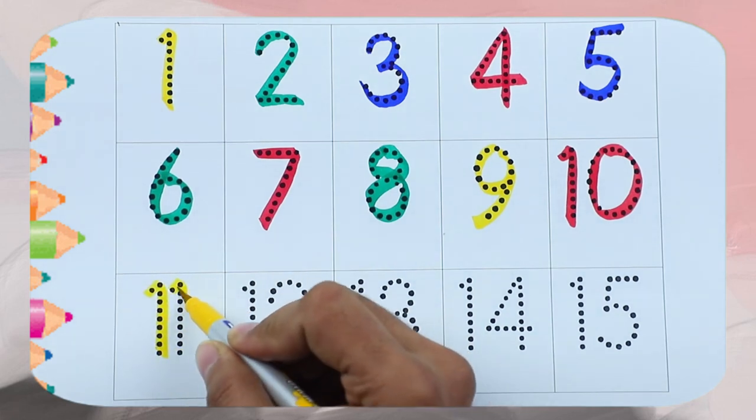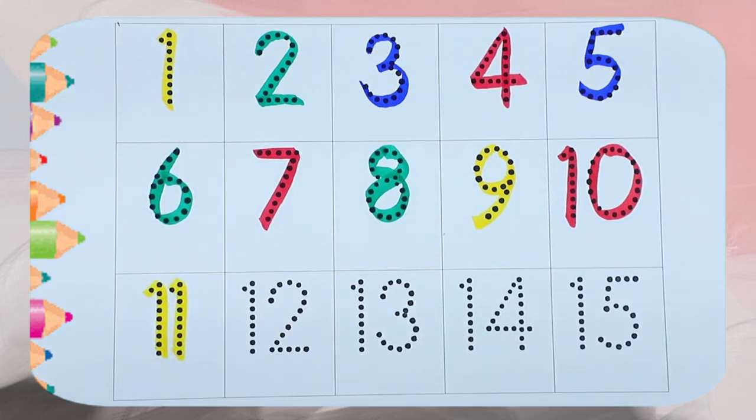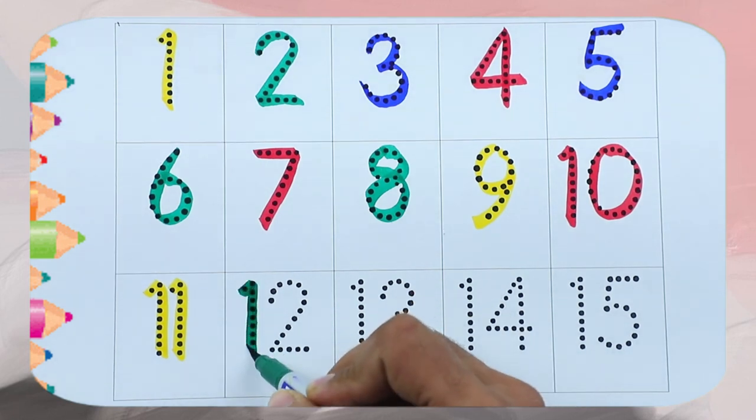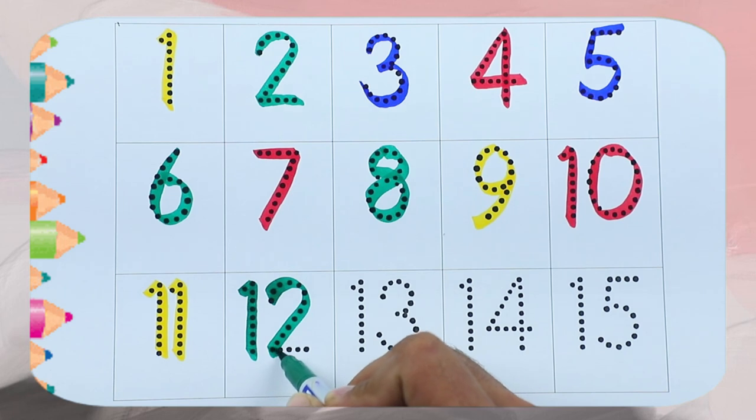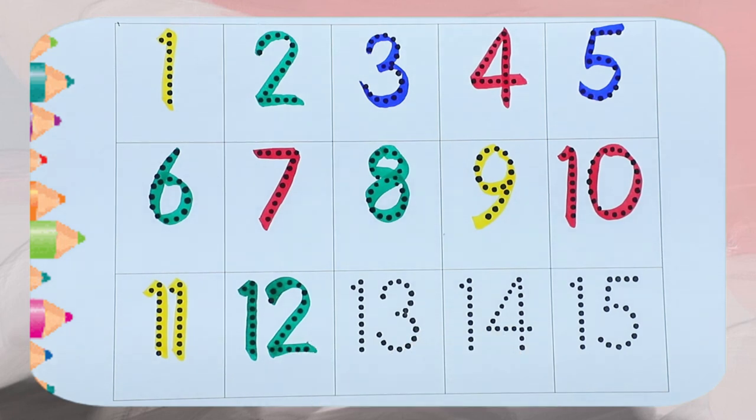1, 1. Double 1 means 11. Blue color. 1, 2, 12. Green color, number 12.